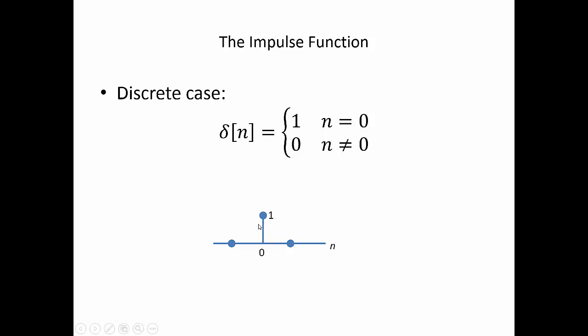Like any other discrete function, when we draw it, we draw it as a stem plot, so it has an amplitude of 1 when n is 0, and an amplitude of 0 at other values of n.